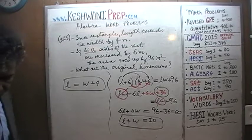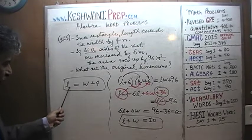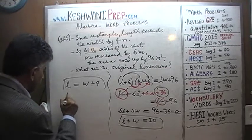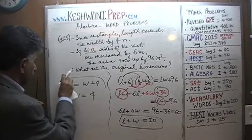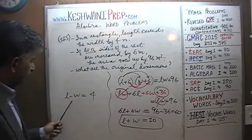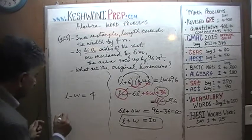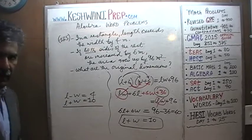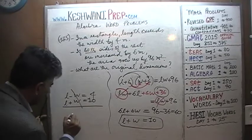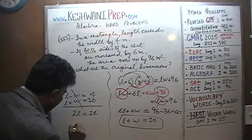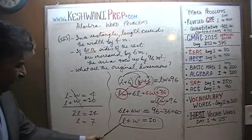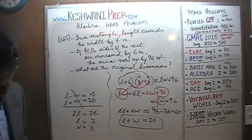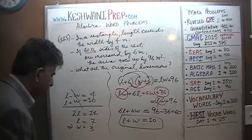That's our second equation: L plus W equals 10. From the first equation, we rearrange to get L minus W equals 4. Now we have two equations: L minus W equals 4, and L plus W equals 10. Add the two equations — the W's drop out, 2L equals 14, therefore L equals 7. If length equals 7, then W must be 3.